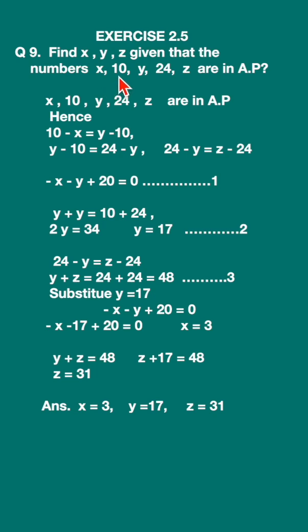Let us write down the common difference. 10 minus x is equal to y minus 10, because that is the common difference. Now y minus 10 is equal to 24 minus y. Similarly we can say 24 minus y is equal to z minus 24. So I have written down these three equations. Now let us try to simplify it.